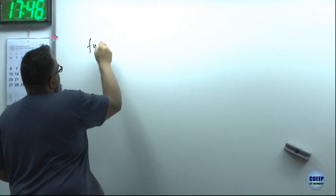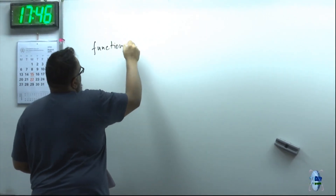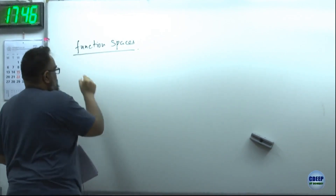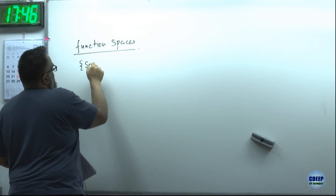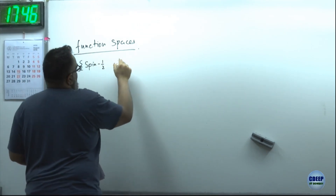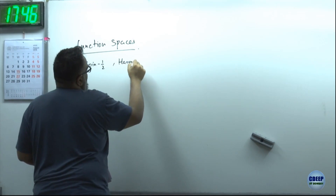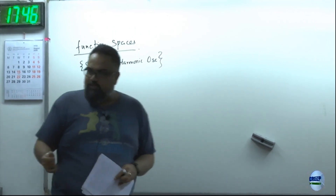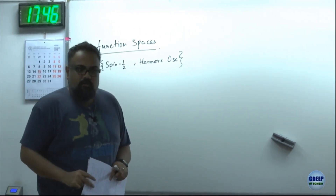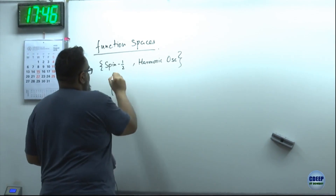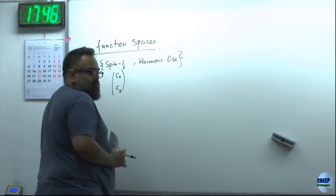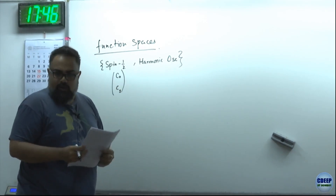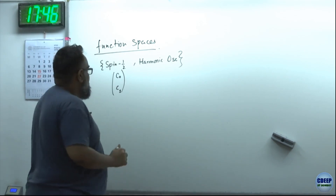What I want to do today is function spaces. What I really want you to think about is the fact that spin-half and harmonic oscillator are both examples of problems in quantum mechanics that you've studied. For spin-half problems you would have written something like C0, C1 - a vector with two entries, maybe complex.